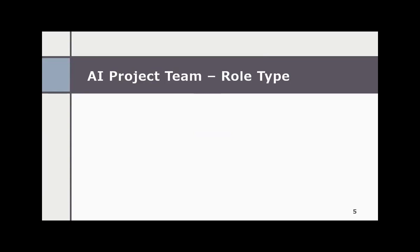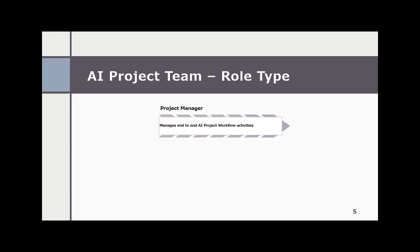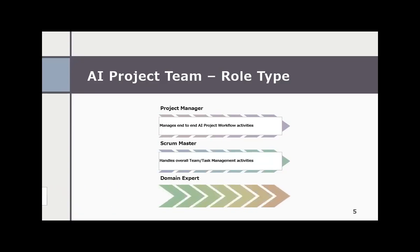Let's briefly look at each role type. Project manager manages end-to-end AI project workflow activities. Scrum master handles overall team task management activities. Domain expert provides expert insights and knowledge on business domain.